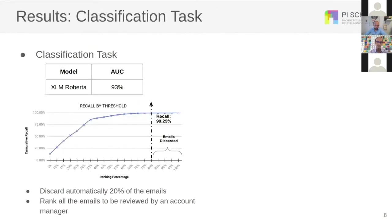Here are some results for the classification task. Our multilingual RoBERTa model achieved an AUC of 93. With this model, we can automatically discard 20% of the emails and also route all emails to be reviewed by an account manager.